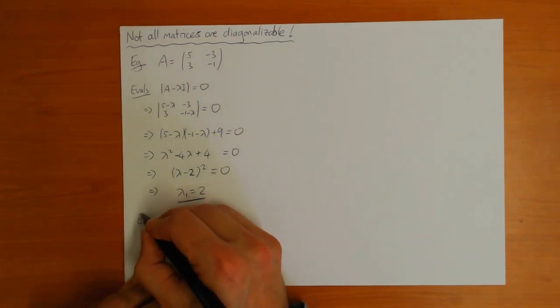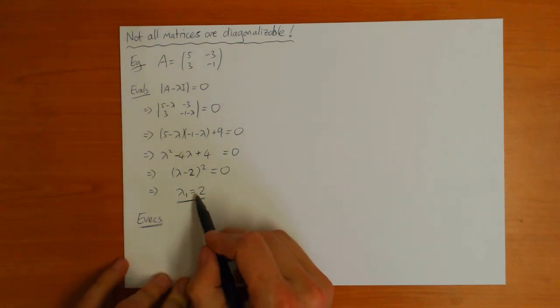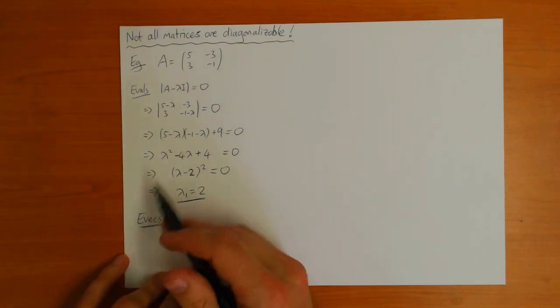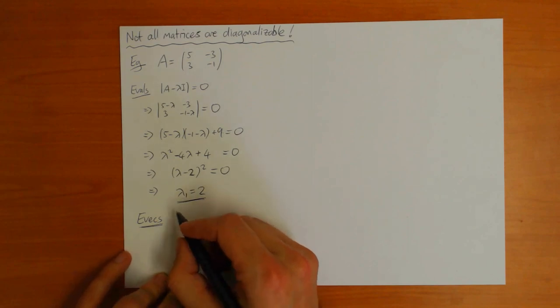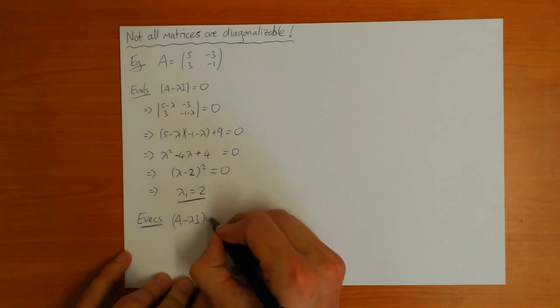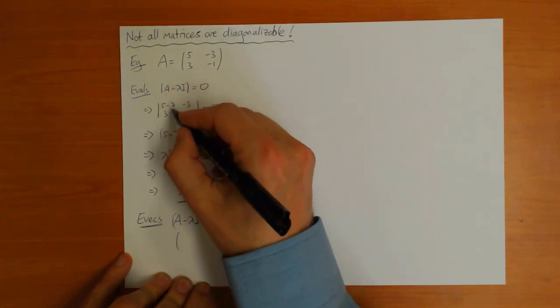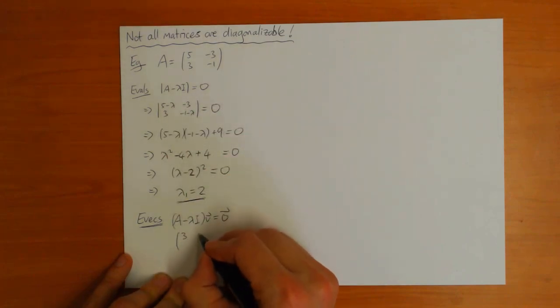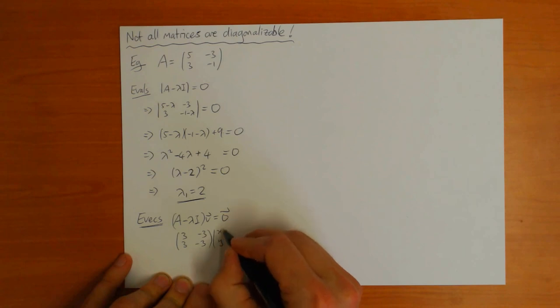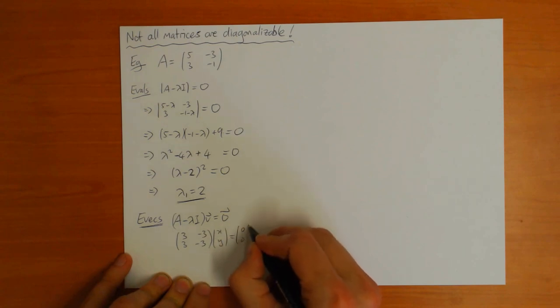We should also check that there are less eigenvectors as well, because it's possible that one eigenvalue could have more than one eigenvector. We need to solve A minus lambda I times V equals 0. Put lambda equals 2 into this equation, you get 3 minus 3, 3 minus 3, times x, y equals 0, 0.